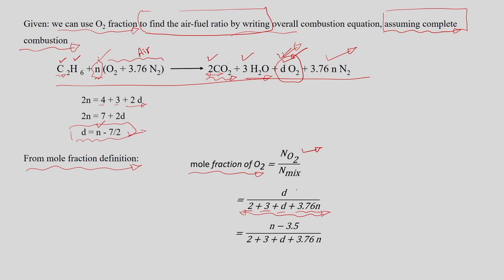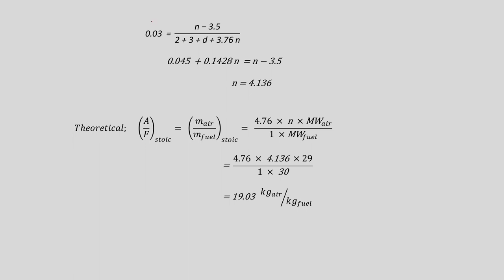Substituting D = N − 3.5 into the numerator and denominator, the entire equation is expressed in terms of N only. We know the mole fraction of oxygen in the product gas is 0.03. After substituting and rearranging, we get the value of N as 4.136.